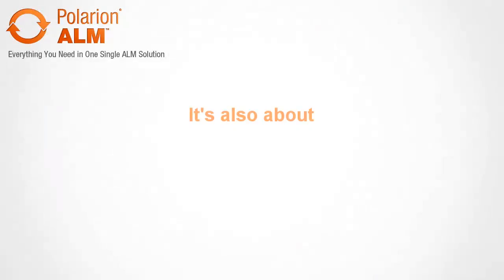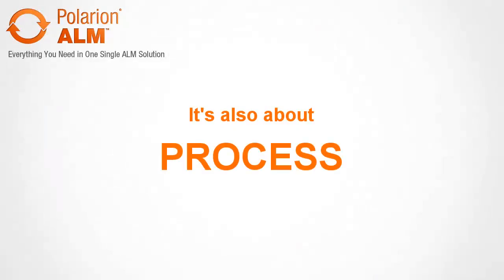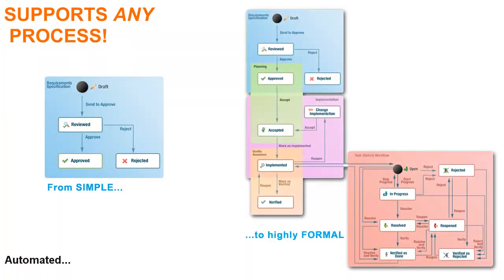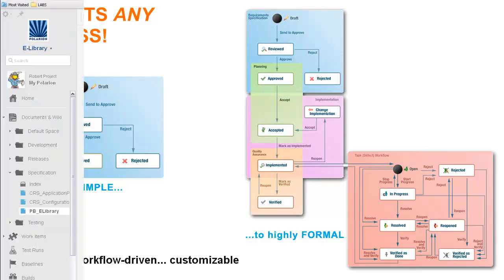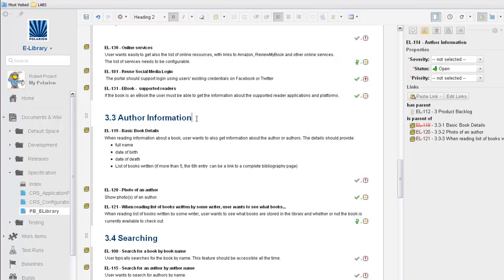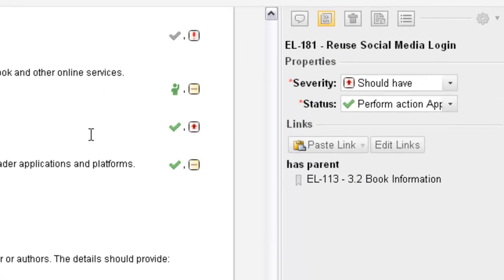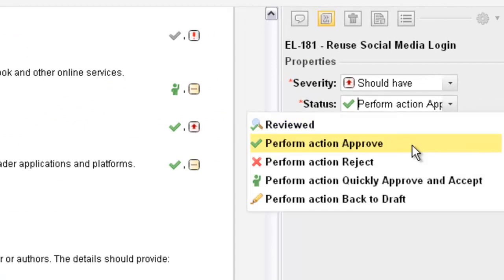Polarian solutions aren't just about content and data — they're also about efficient, controlled process. Start fast with our predefined project workflows, or customize them to support any process for any kind of project. Approvers can easily review artifacts like requirements by simply reading a document using an inexpensive reviewer license, and approve them with just a click.